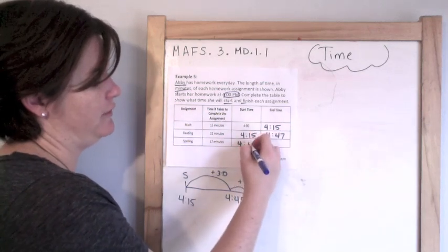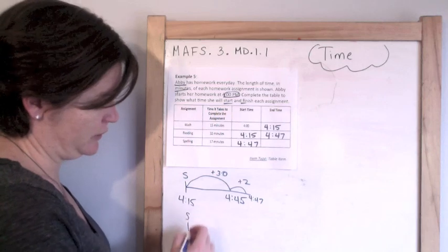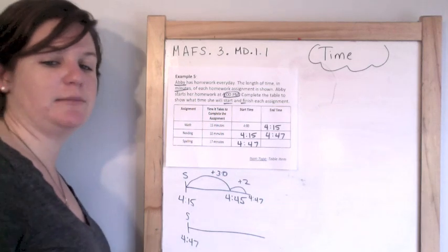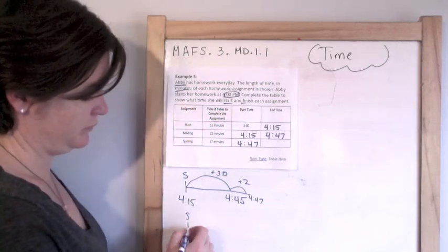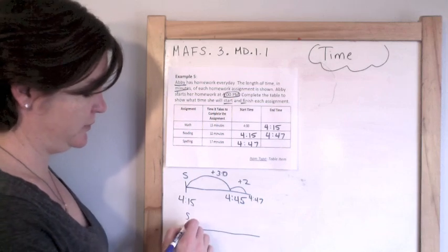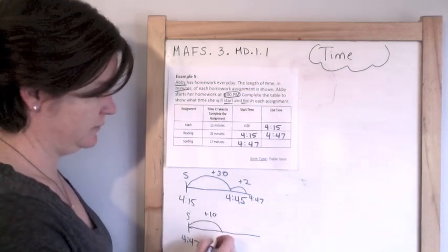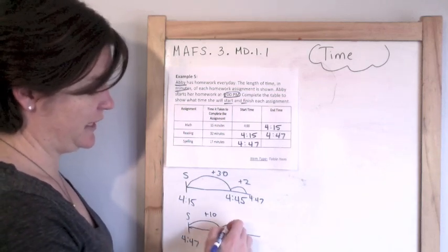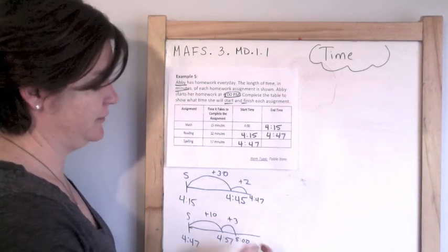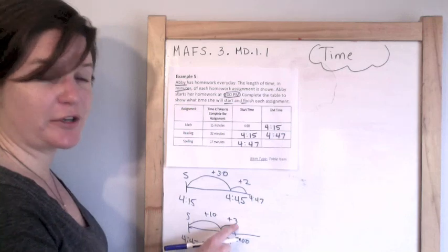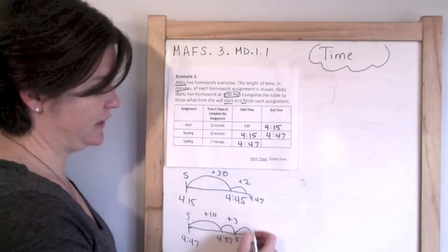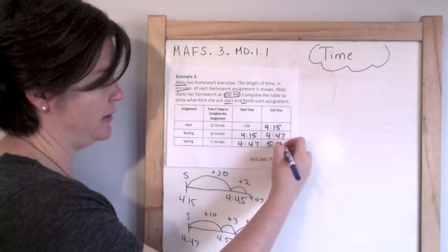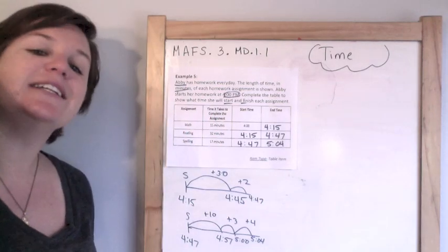That means she's starting her next assignment at 4:47. It takes her 17 minutes this time. So first I'm going to add 10 minutes — that gets me to 4:57. Then I'm going to add 3 minutes to get to 5 o'clock. So 10 plus 3 is 13, and I need 4 more minutes to get to 17. So plus 4 would be 5:04. Nice job, Abby Cadabby, on your homework and getting it done in about an hour.